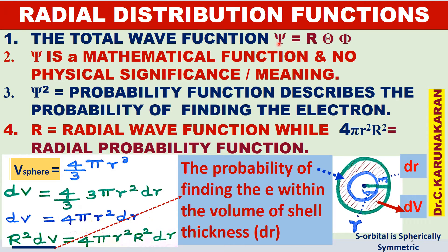The total wave function is represented as ψ = R(r)·Θ(θ)·Φ(φ). The total wave function is obtained by solving the Schrödinger wave equation of the hydrogen atom or hydrogen-like atom, as we have studied earlier. The wave function is a mathematical function obtained by solving the Schrödinger wave equation.